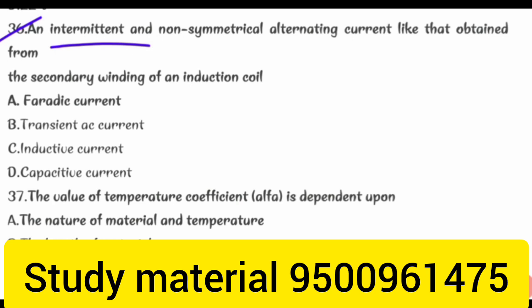Intermittent and non-symmetrical alternating current like that obtained from the secondary winding of an induction coil: pulsating current.